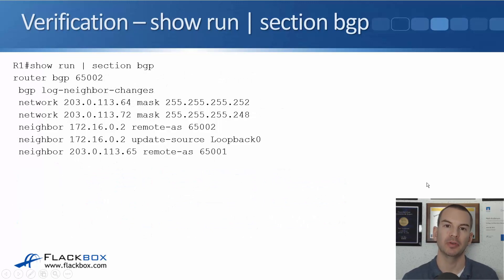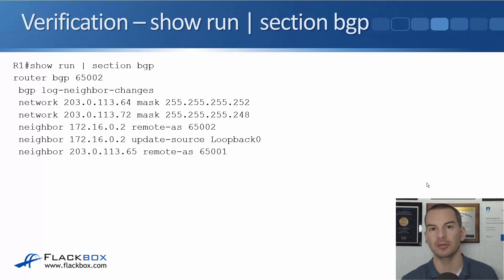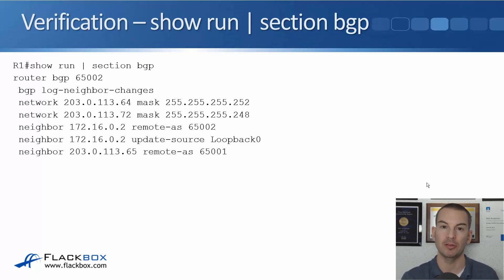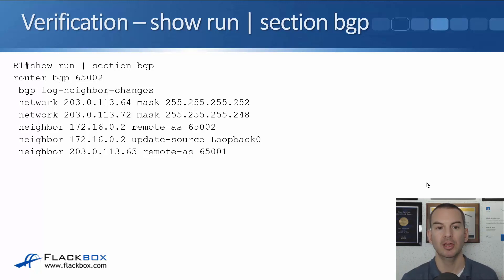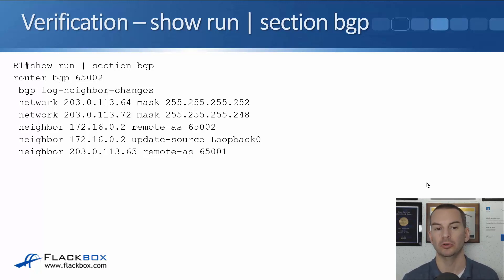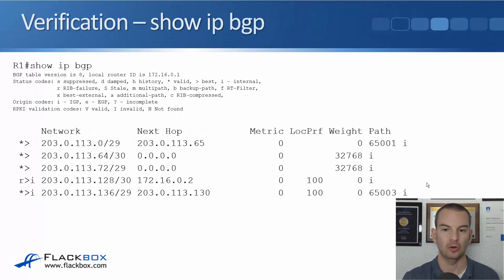Once we've got everything configured, to see all of our BGP commands in one place we can do show run section bgp. On R1 at the top level we've got router BGP 65002, and bgp log-neighbor-changes which is there by default — it logs whenever a BGP neighbor goes up or down. We've got our network statements for the networks we want to advertise, and our neighbor statements, including 172.16.0.2 with update-source loopback0 for the iBGP neighbor, and the eBGP neighbor at 203.0.113.65.